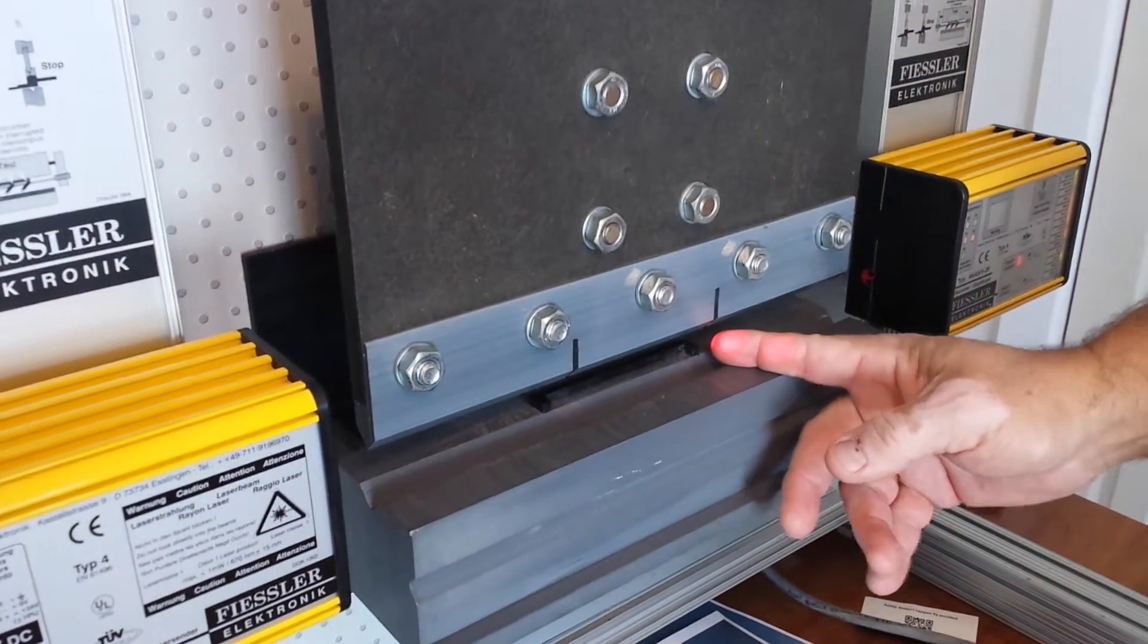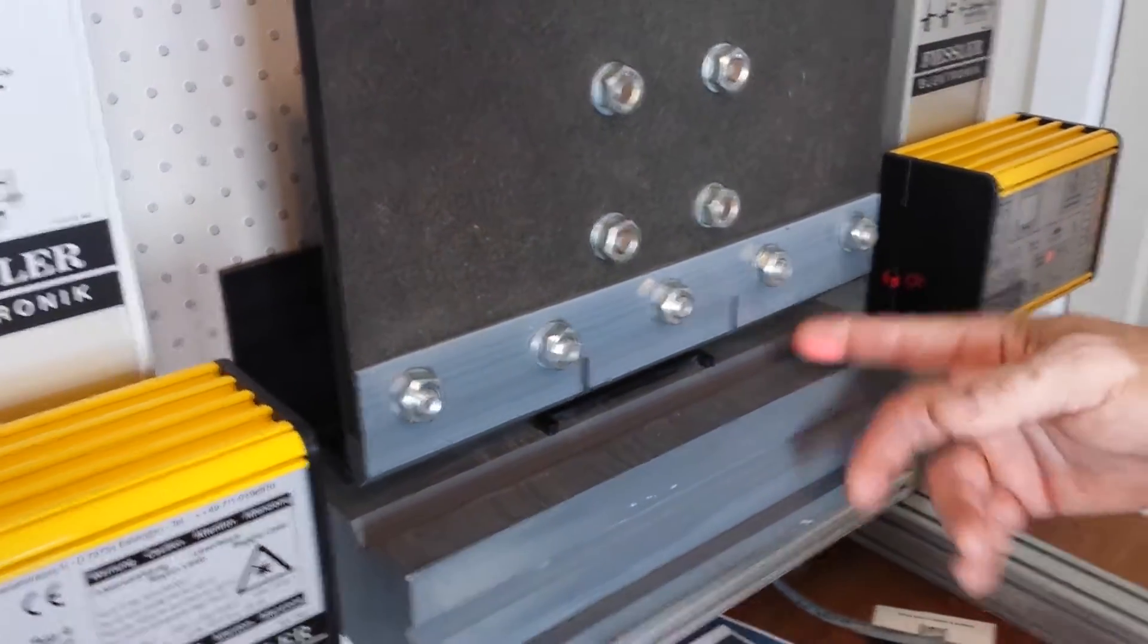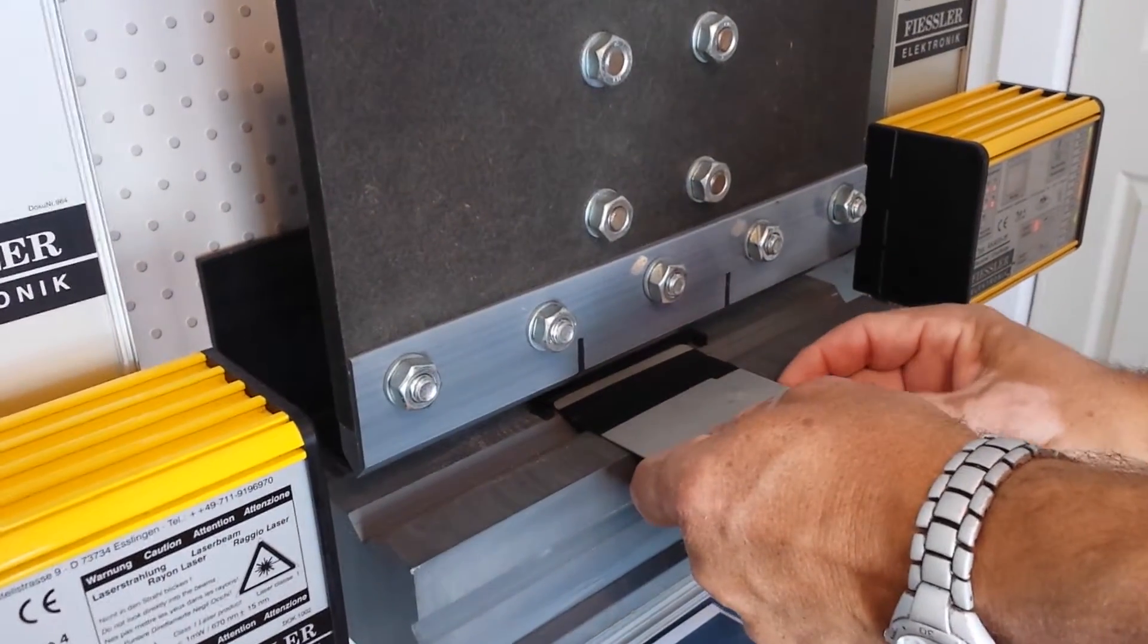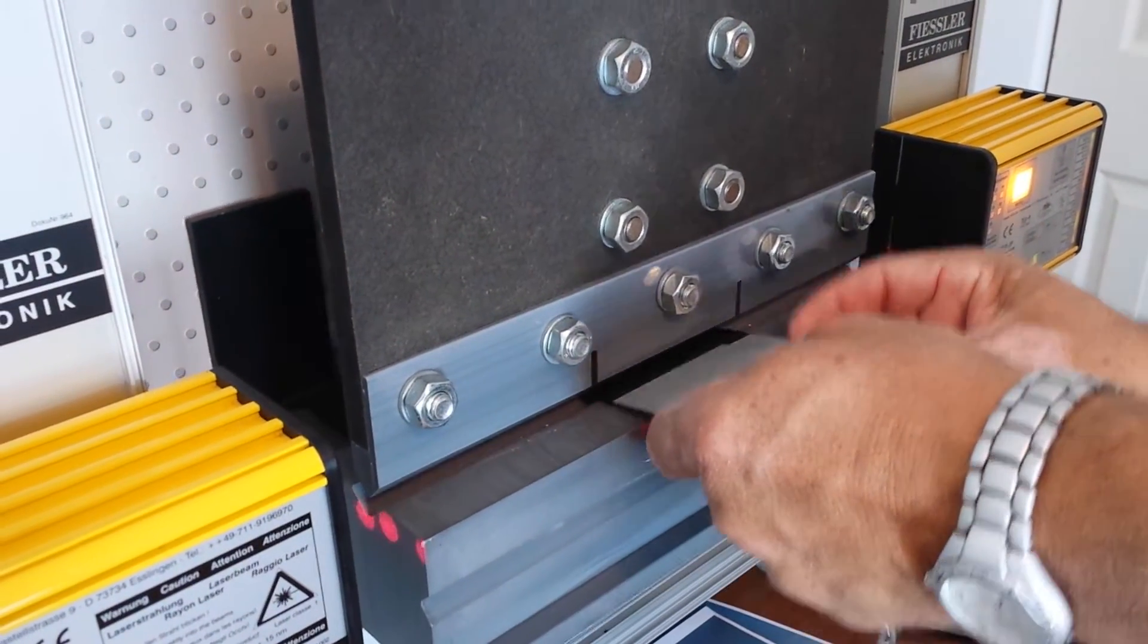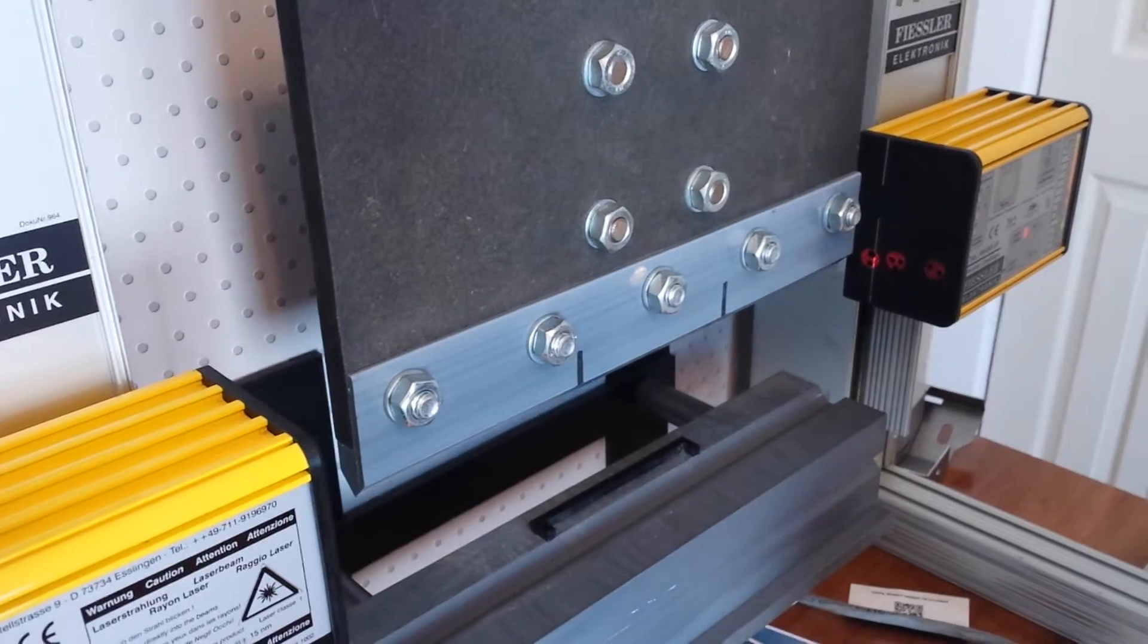As you're bending, if you happen to slip off, it'll stop it automatically. You can get back on off the pedal, back on the pedal, it doesn't shut the press brake off and you can make your bend.